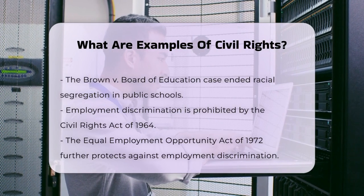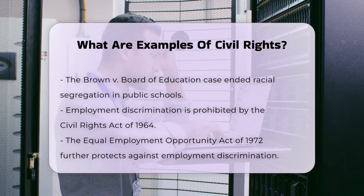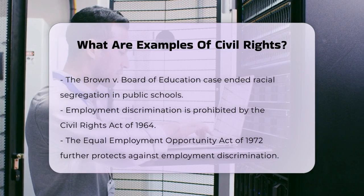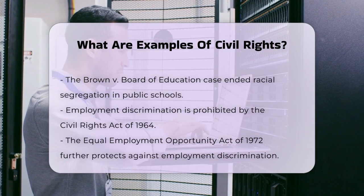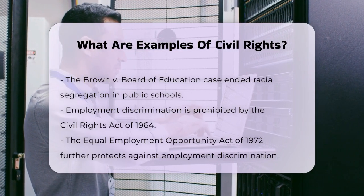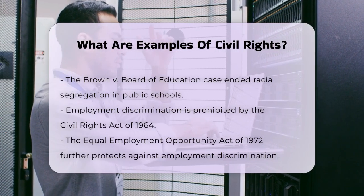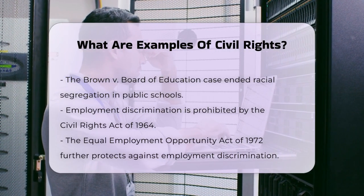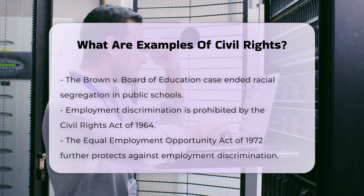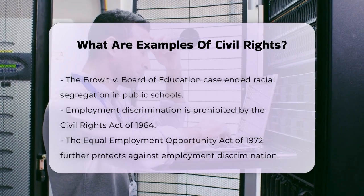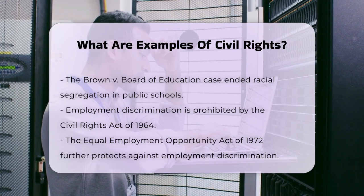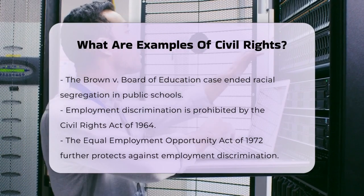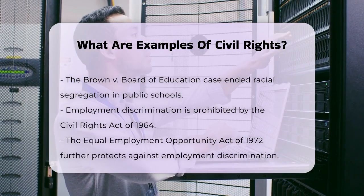The right to use public facilities and access public accommodations is another important civil right. The Civil Rights Act of 1964 banned discrimination in public accommodations, public education, and employment, making it illegal to deny service based on race, color, religion, sex, or national origin.